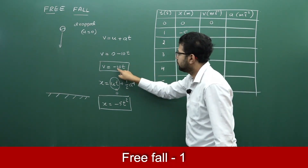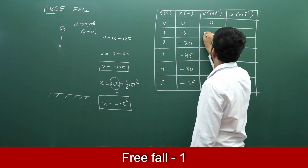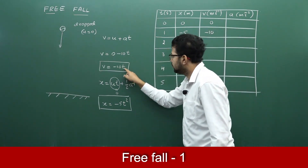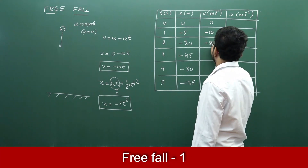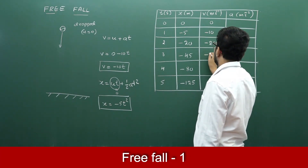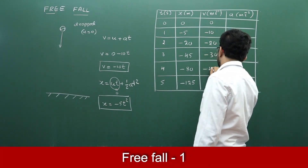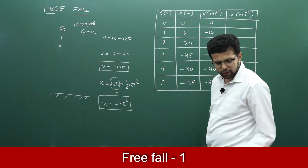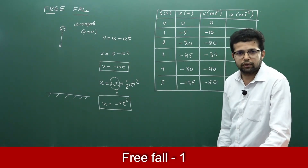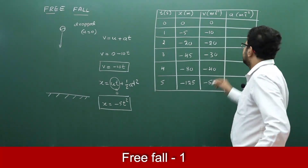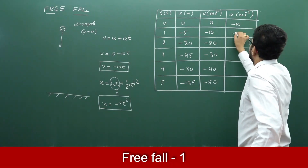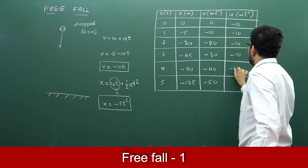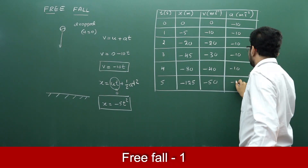When t = 1, velocity is minus 10 × 1 = minus 10; t = 2 gives minus 20; and so on: minus 30, minus 40, minus 50. Acceleration due to gravity is always constant at minus 10 meter per second square — minus 10 at every time value.